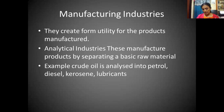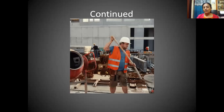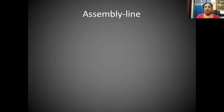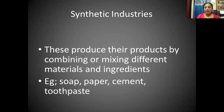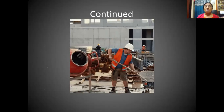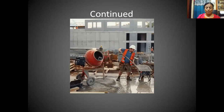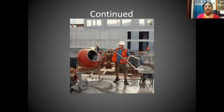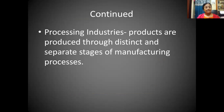Synthetic industries produce their products by combining or mixing different materials. For example, while preparing soap, different chemicals and ingredients are mixed and processed to manufacture the final product. Similarly, for manufacturing paper, cement, and toothpaste, several ingredients are mixed and processed. These are called synthetic industries because multiple inputs are combined to create one product.